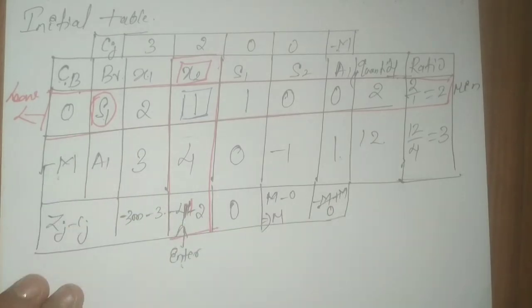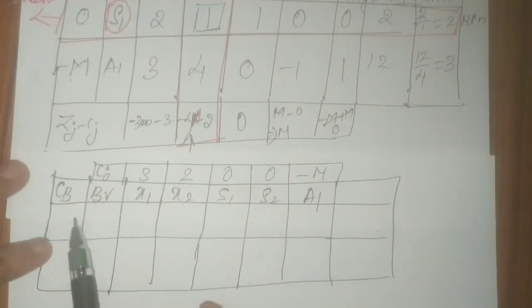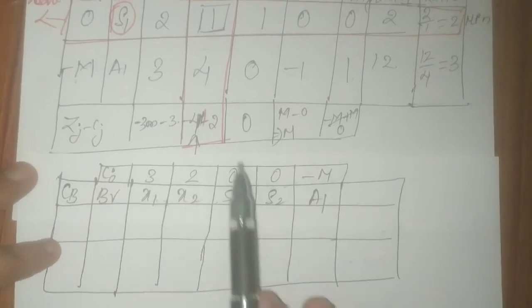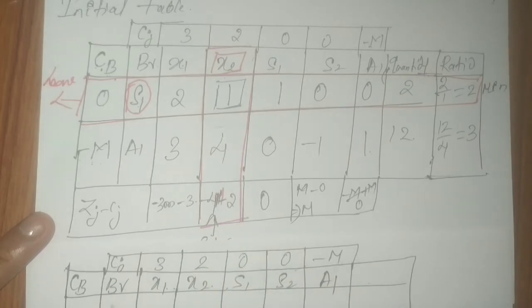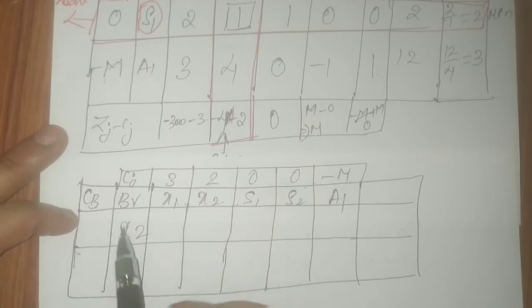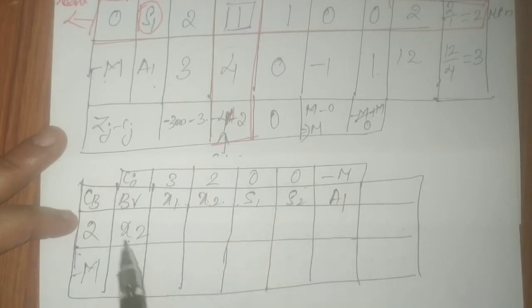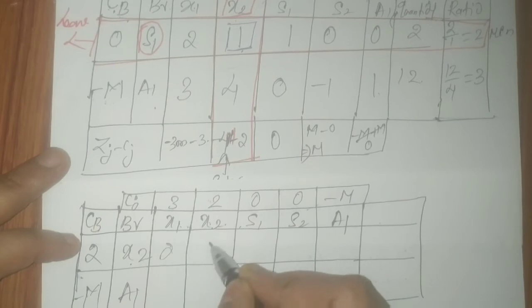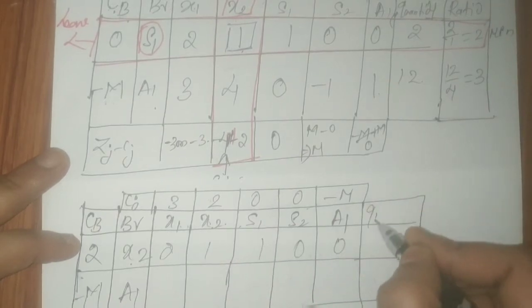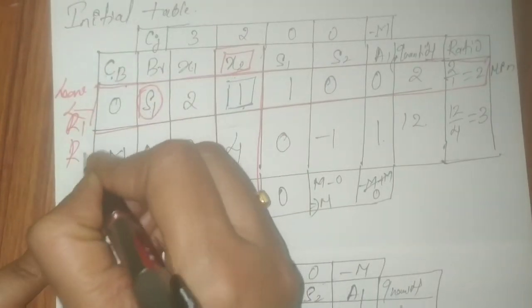Moving to the next table: x2 replaces s1. The cb for x2 is 2 (its objective function coefficient). A1 remains with coefficient minus M. Since the pivot is already 1, the new R1 dash row is unchanged: 2, 1, 1, 0, 0 with quantity 2. We label these rows R1 dash and R2 dash to proceed with row operations.